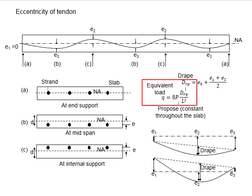We can quantify the equivalent load based on the tendon profile. The P here represents the prestressing force which is applied constant throughout this slab. The L here represents the effective span of each segment.